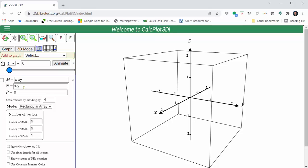We enter the x component under m, the y component under n, and the z component under p. Because we have 2D vector fields, we will leave p equal to zero.